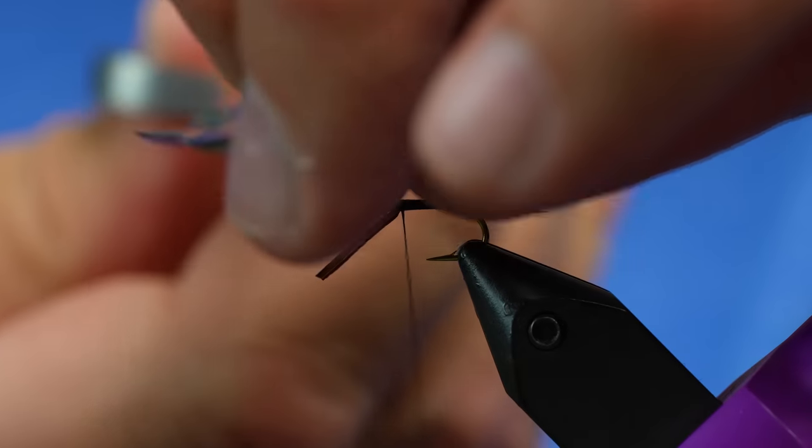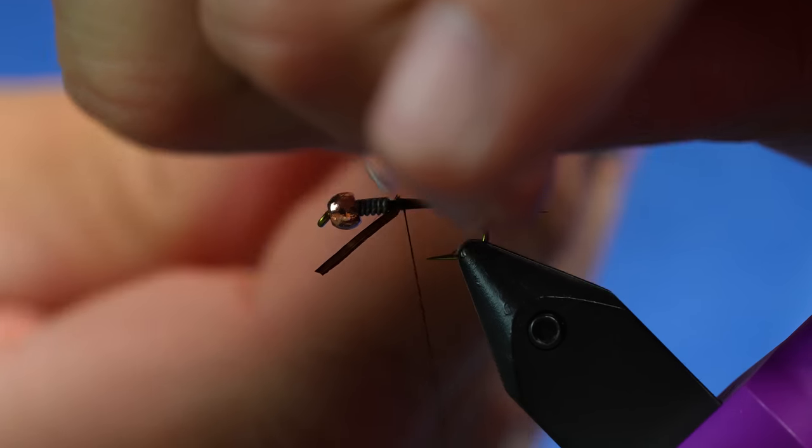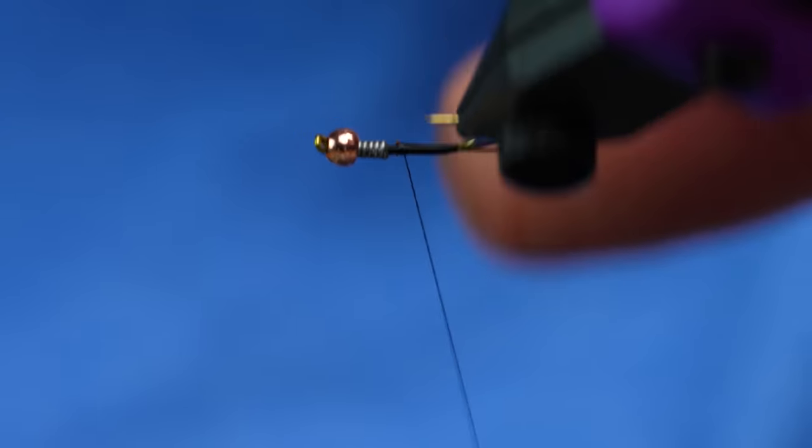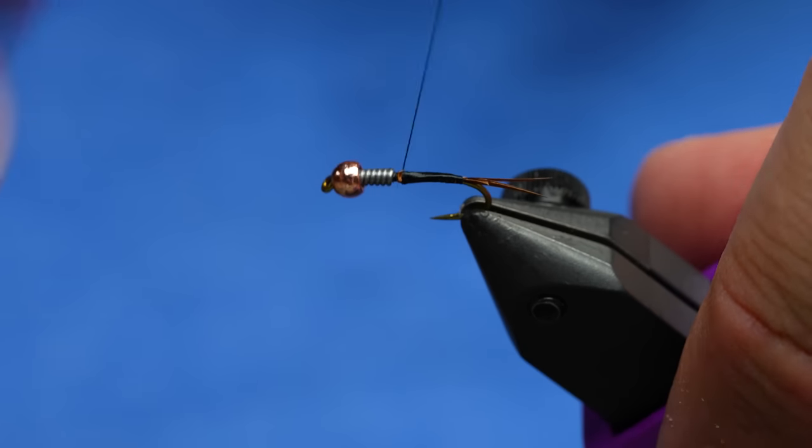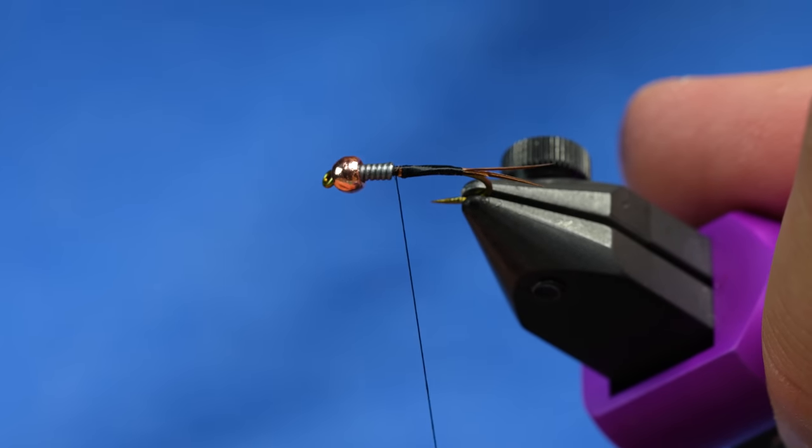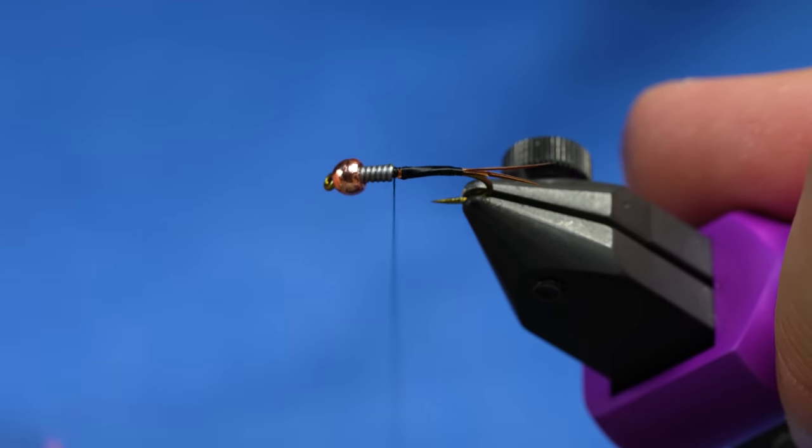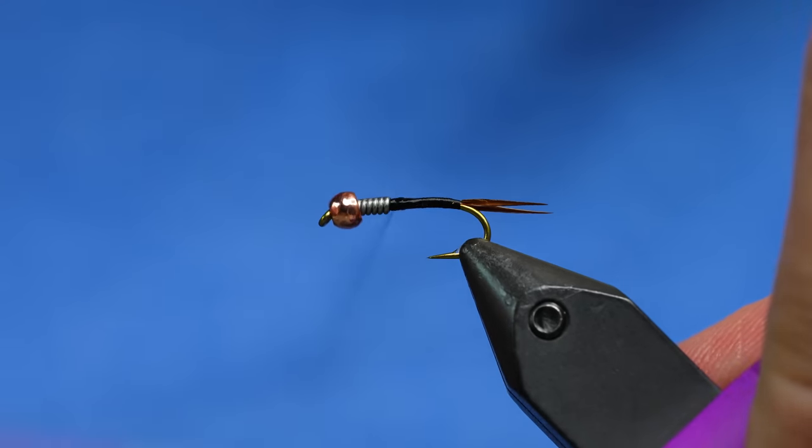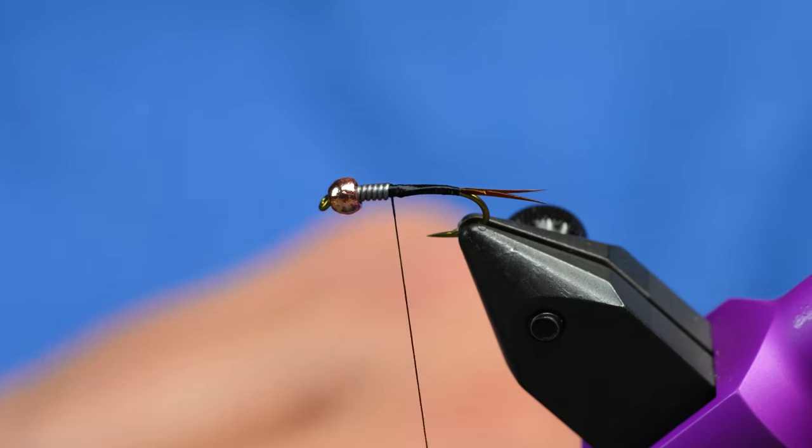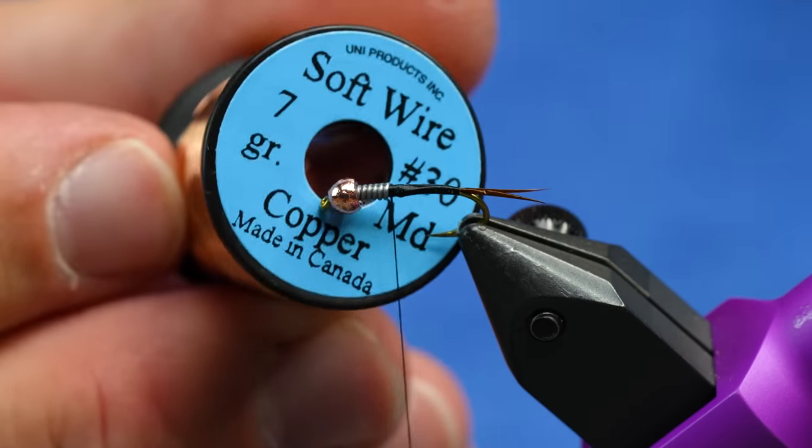It's okay if they twist a little bit. We're going to cover all that up. Once it's up here, we'll cut those off. And try to smooth out this spot where I cut them off. From here, we're going to attach our wire. This is uni soft wire. It's been around for a long, long time.